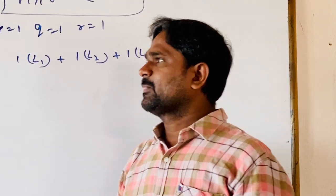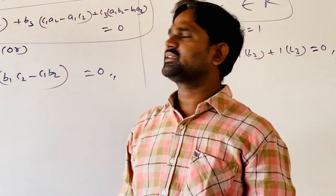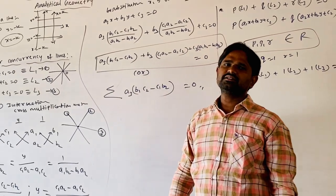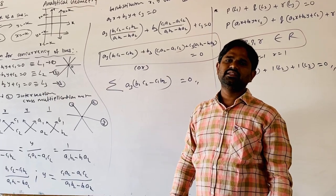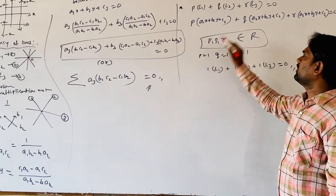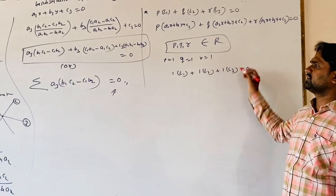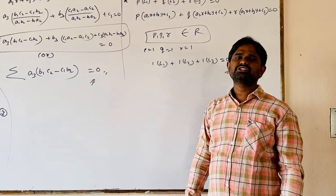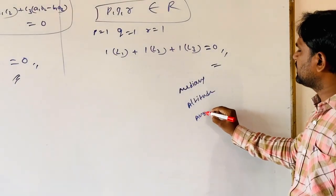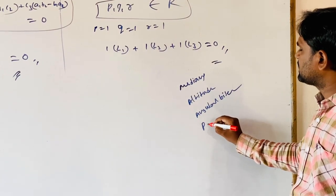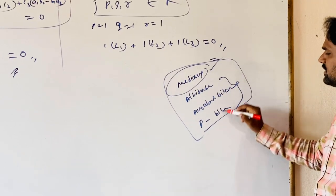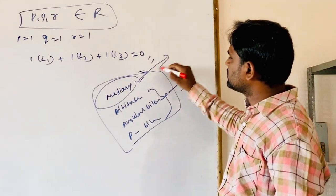So, image of a line with respect to the coordinate axis: x = K has image x = −K. Condition for concurrence of lines: two or more lines intersecting at a point are said to be concurrent, and we have two conditions for concurrence of three lines. Next, we are going to discuss the intersection of medians, altitudes, angular bisectors, and perpendicular bisectors. In these four cases, except medians, we will find the altitudes, angular bisectors, and perpendicular bisectors in one rule, and medians in another rule. Thank you.